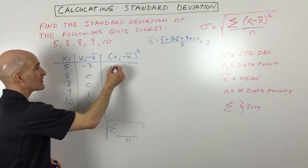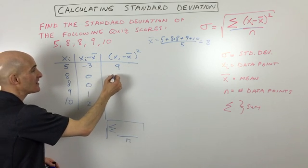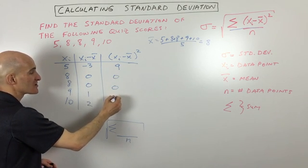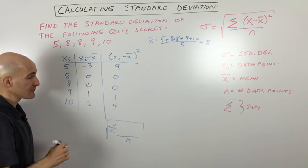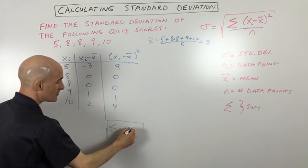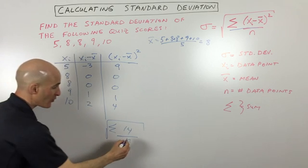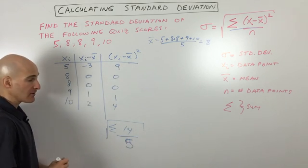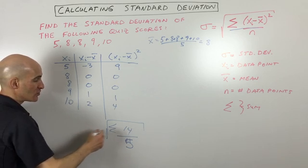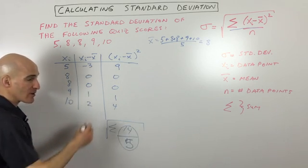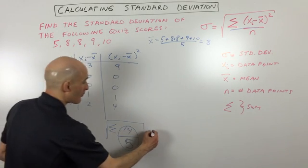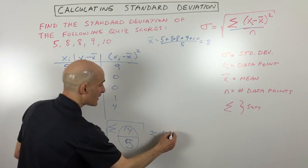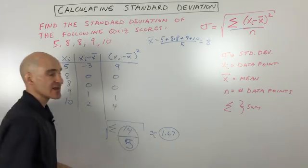We're going to then square them. Negative 3 squared is positive 9, 0 squared is 0, 0 squared is 0, 1 squared is 1, and 2 squared is 4. We're going to add those up, so that comes out to 14. We're going to divide by how many data points we have, which in this case it's 5. And then so this is 14 divided by 5, and we're going to take the square root, and if we do that we get approximately 1.67. So that's our standard deviation.